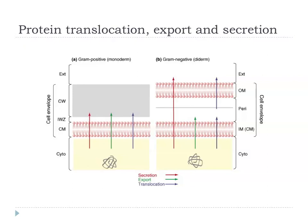In gram-negatives we have a more difficult situation, because we have two membranes — the inner membrane and the outer membrane — spanning the periplasm, which contains things like peptidoglycan. Some people would say we should talk about secretion only when getting across the whole cell envelope to the outside world — across the inner membrane, periplasm, and outer membrane in one step. Protein export refers to getting stuff out of the cytoplasm across the inner membrane into the periplasm. Translocation refers to crossing a particular membrane.